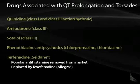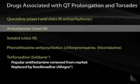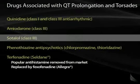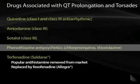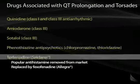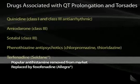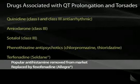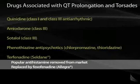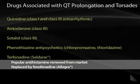Other medications associated with QT prolongation include the class 1 and class 3 antiarrhythmics, quinidine, amiodarone, and sotalol. Sotalol is both a beta blocker and a potassium channel blocker, considered a class 3 antiarrhythmic. Also, chlorpromazine and thioridazine. Terfenadine (Seldane), thought to be a replacement for diphenhydramine, was removed from the market because it prolonged the QT to a high degree, and was replaced by fexofenadine, which does not prolong the QT interval.